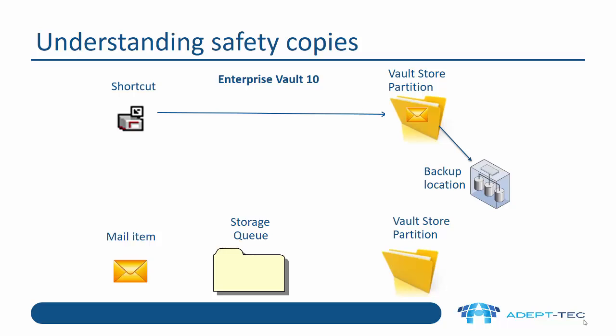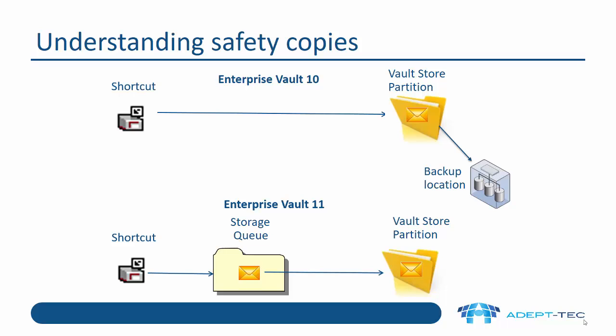In Enterprise Vault 11, we have a physical storage queue. The item is turned into a pending item, committed to the storage queue, and then archived to the Vault Store partition. We can keep our safety copy on the storage queue, so we don't need to keep it in Exchange. Once the item is committed to the Vault Store partition, we can immediately turn it into a shortcut. When the Vault Store partition is backed up later, we can then delete the item from the storage queue, because otherwise items would keep building up and using disk space.